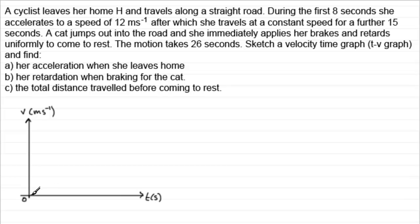And she accelerates at a constant rate. It doesn't say that a constant rate, but I'll assume that it is a constant rate for eight seconds. So we'll make that eight there. So if she accelerates at a constant rate up to a speed of 12 meters per second, we'll make that the 12.